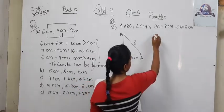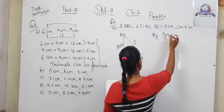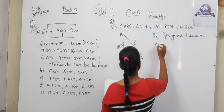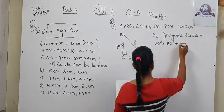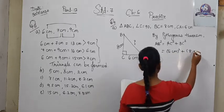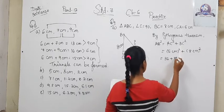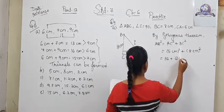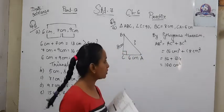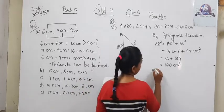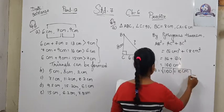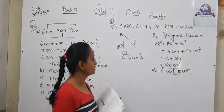By Pythagoras theorem, AB square is equal to AC square plus BC square. AC is 6 cm, so 6 cm squared plus 8 cm squared. 6 squared is 36 and 8 squared is 64. 36 plus 64 equals 100 cm squared. We need to find side AB, so AB equals square root of 100, which is 10 cm. So AB, the hypotenuse, is 10 cm.